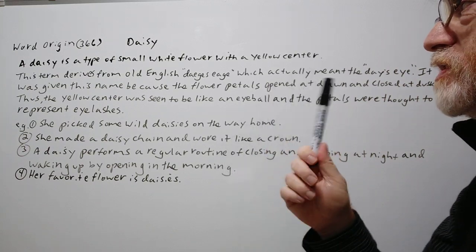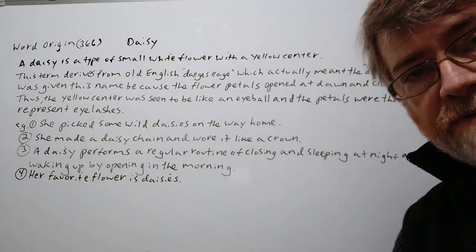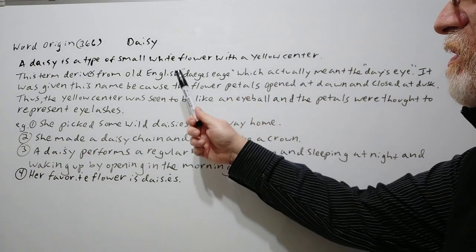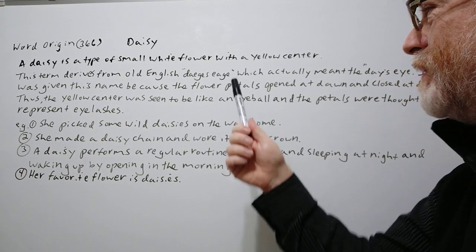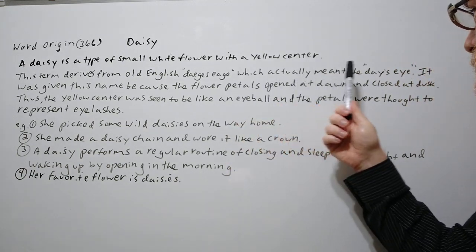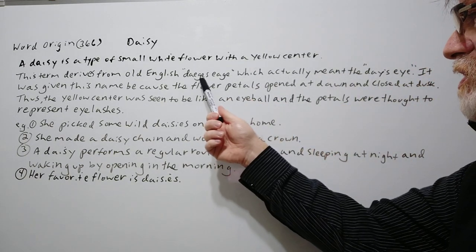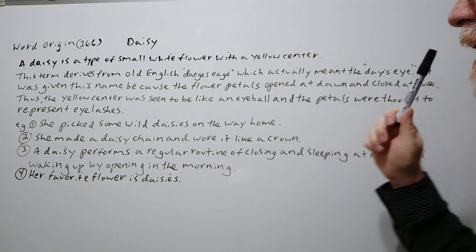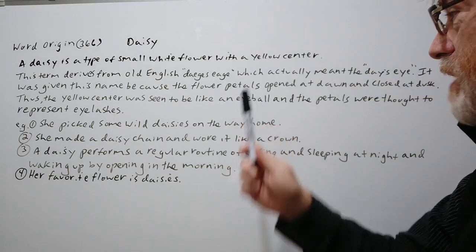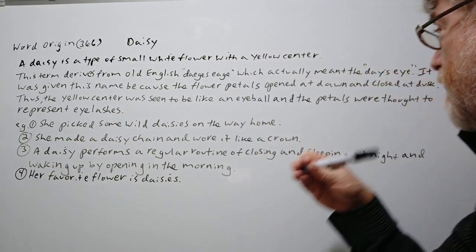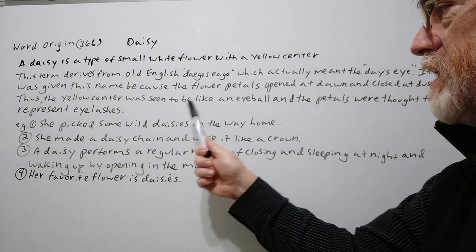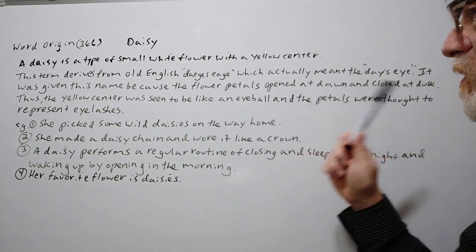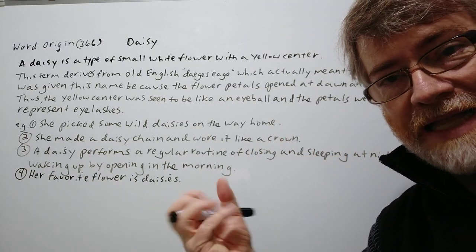A daisy is a type of small white flower with a yellow center. The term derives from the Old English, which actually meant 'the day's eye.' It was given this name because the flower petals opened at dawn and closed at dusk. Thus the yellow center was seen to be like an eyeball, and the petals were thought to represent eyelashes.